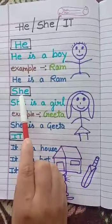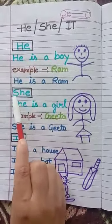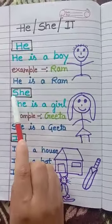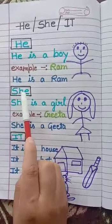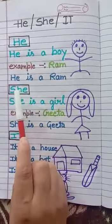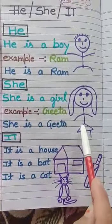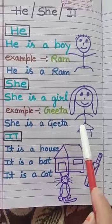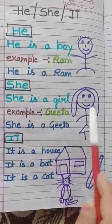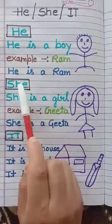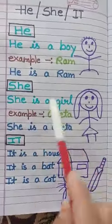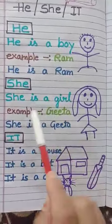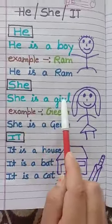She. What is the spelling of she? S, H, E — she. Now look at the picture. The picture is of a girl. She is used for a girl. She is a girl.